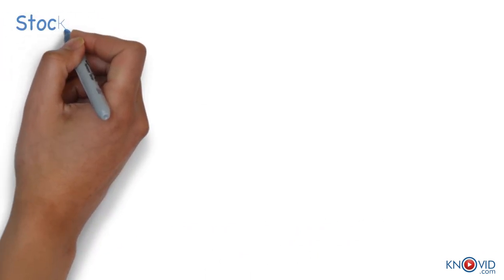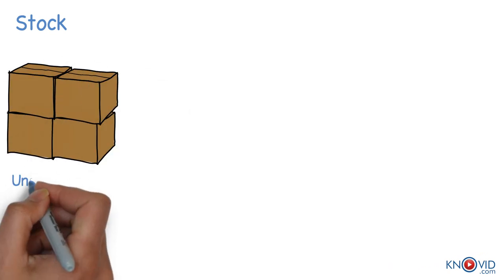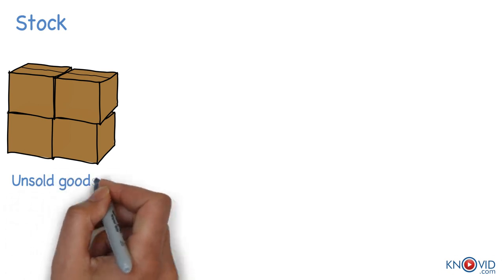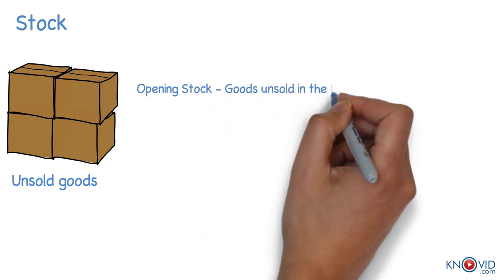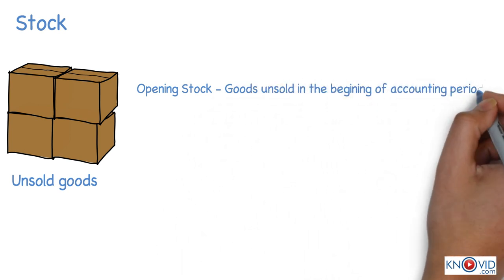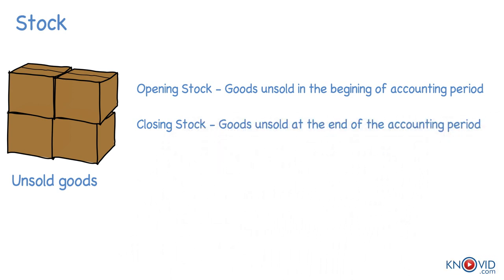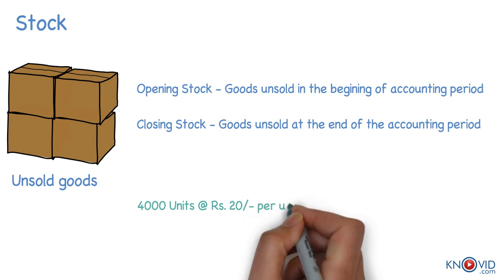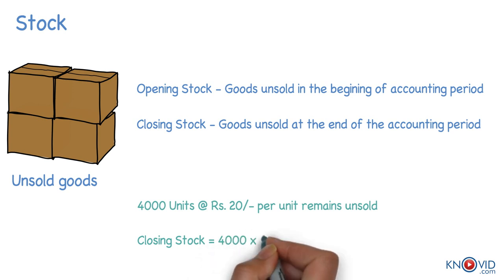Stock includes goods unsold on a particular date. Stock may be opening and closing stock. Opening stock means goods unsold in the beginning of the accounting period whereas the term closing stock includes goods unsold at the end of the accounting period. For example, if 4000 units purchased at Rs. 20 per unit remain unsold, the closing stock is Rs. 80,000. This will be the opening stock of the subsequent year.